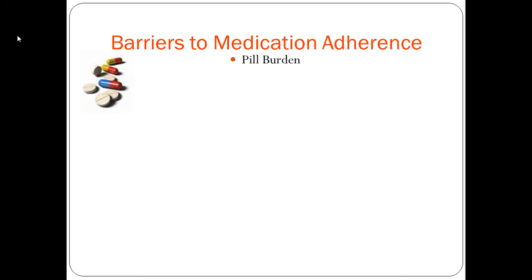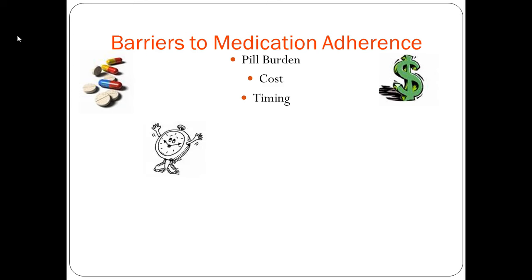Some barriers to medication adherence include pill burden — there are many pills to take, which is a large burden especially for patients who don't like swallowing pills. Cost is also a barrier — HIV medications can be expensive, though programs that provided free HIV medications may have decreased due to changes with the Affordable Care Act, as patients should now be covered under health insurance without HIV being considered a pre-existing condition. Timing of the medications is also critical, as they must be taken at the correct time to hit the cell cycle appropriately.